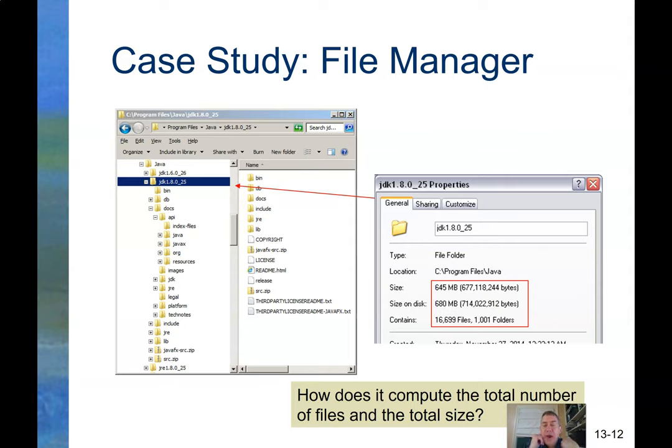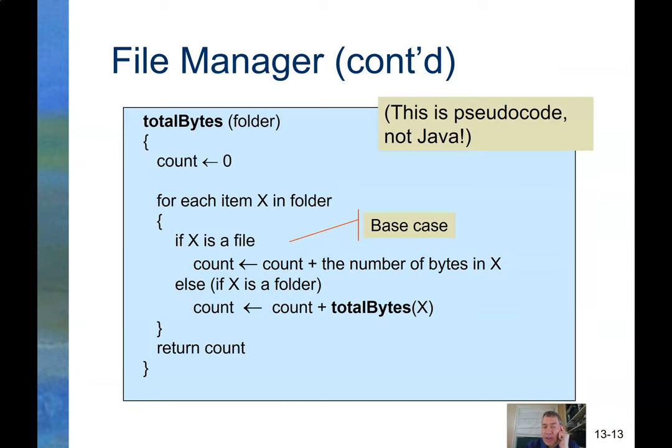Another one. If you have a file system, how could you compute the total number of files? How could you compute the total size of the files? Well, the thing about a file system is you have a folder, and some of the things in the folder are files, and some of the things in the folder are more folders. So there you go. Start with zero. For each item in the folder, if it's a file, add it to the count, but if it's a folder, call yourself recursively on that folder.